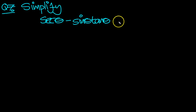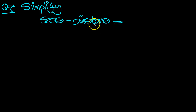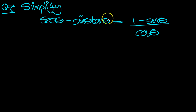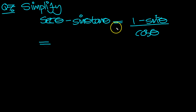Let's simplify this expression. This is one over cosine, and this is sine over cosine, so there's a cosine common — let's put the cosine underneath. Then this is one over cosine and the second part is minus sine theta, and from that sine theta. There's a sine over cosine, so the cosine is taken care of, but we need another sine underneath.